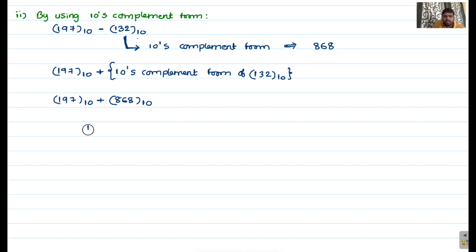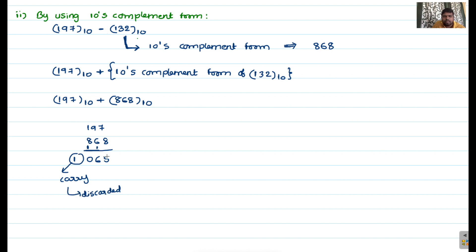Adding 197 and 868: 7 plus 8 is 15, carry 1. 9 plus 6 is 15, plus 1 is 16, carry 1. That gives 0, with carry 1. Then we have the final carry. Since this is r's complement form, we simply ignore the carry and get 65 as the answer. In r-minus-1's complement, you add the carry; in r's complement, you discard it. The advantage of using complement forms is that you can perform subtraction using addition only.